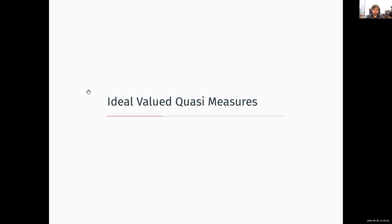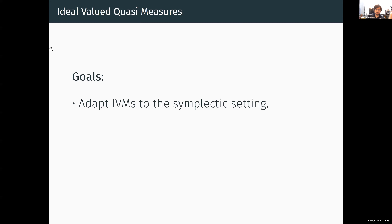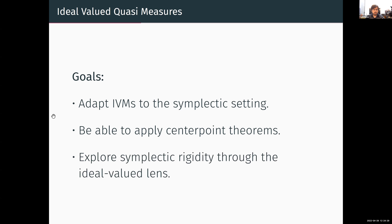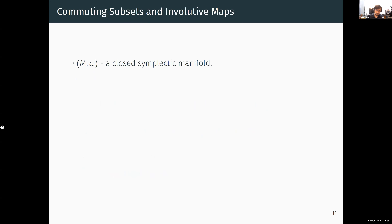How do we adapt all that to symplectic topology? We define what we call ideal-valued quasi-measures (IVQMs), where we weaken one of the axioms of IVMs but add new axioms. The goals are to adapt this IVM story to the symplectic setting and apply those center point theorems due to Karasov and Gromov to get analogous symplectic theorems. Moreover, we further explore symplectic rigidity via this ideal-valued lens.